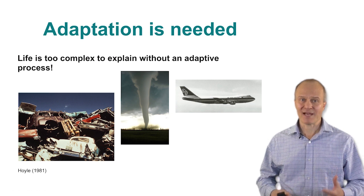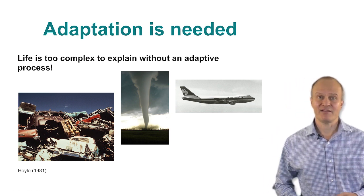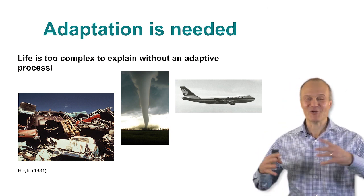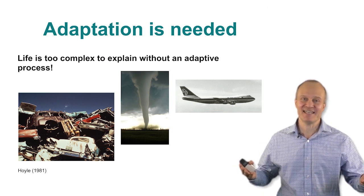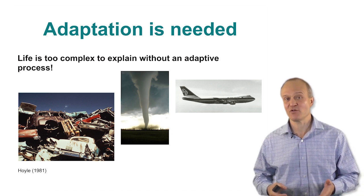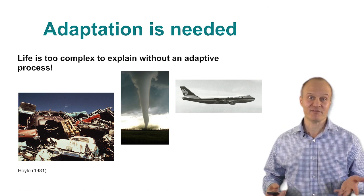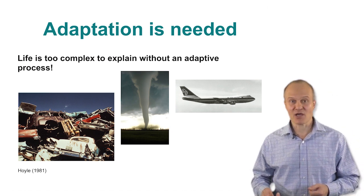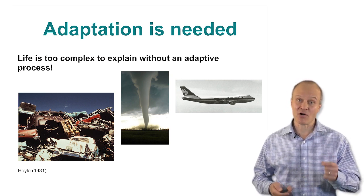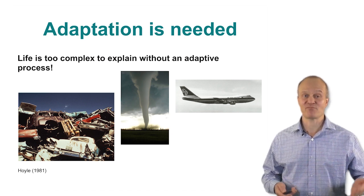This complexity has long posed problems for the origin of life field. Famously, the astronomer Fred Hoyle raised the idea that the probability of life emerging spontaneously from primordial soup is about as likely as a tornado going through a junkyard and spitting out a fully formed jumbo jet. While it's a bit hyperbolic, it is undoubtedly the case that a modern cell is far too complicated to evolve without some kind of prior adaptive process.